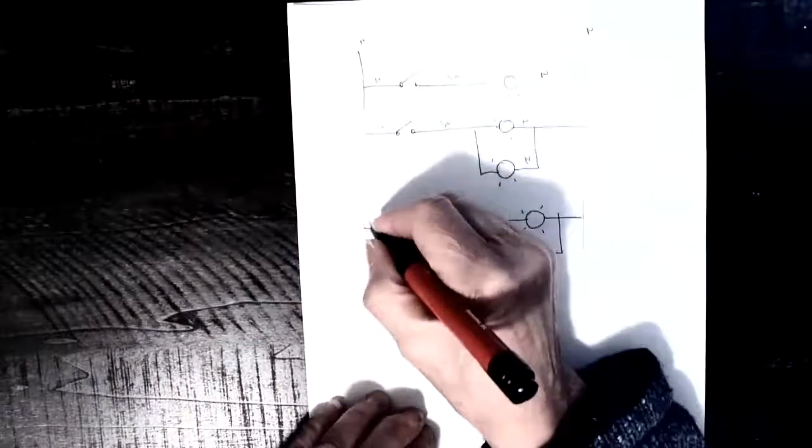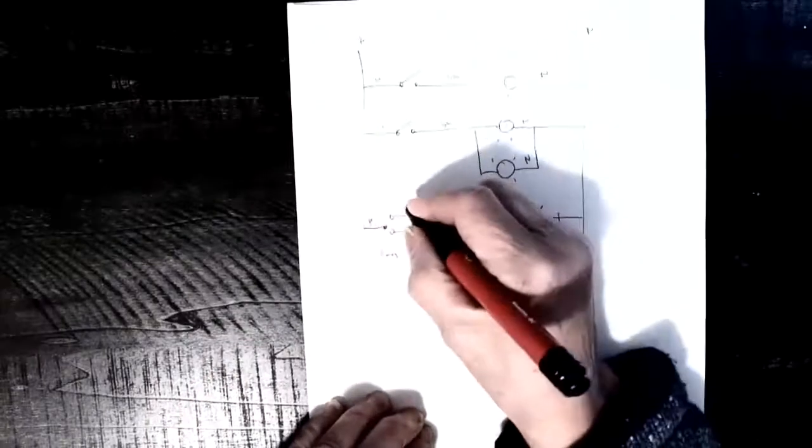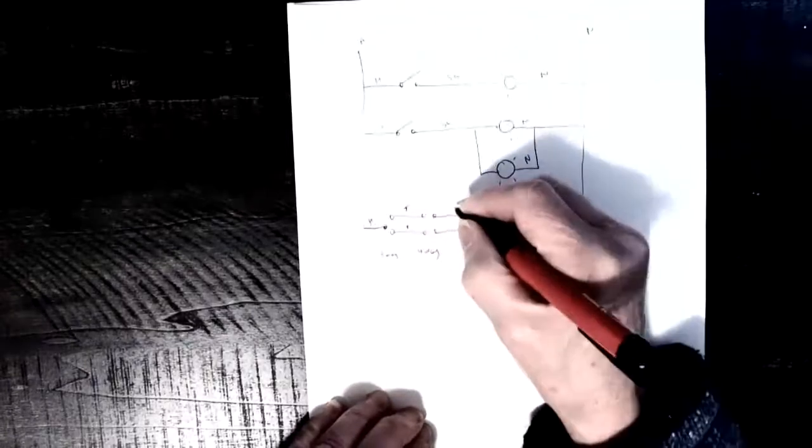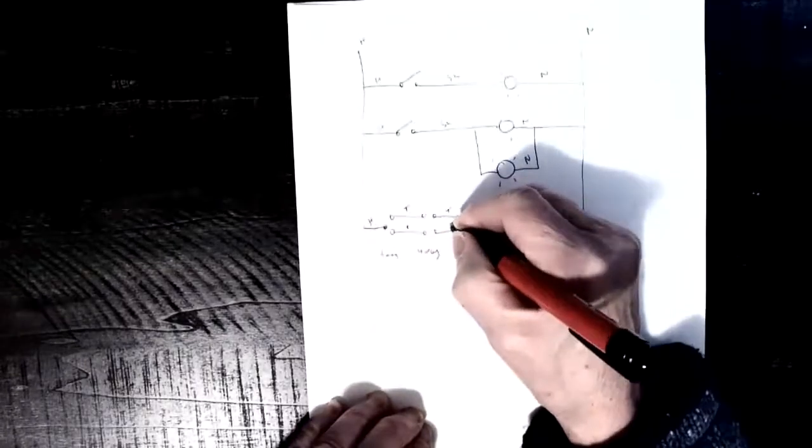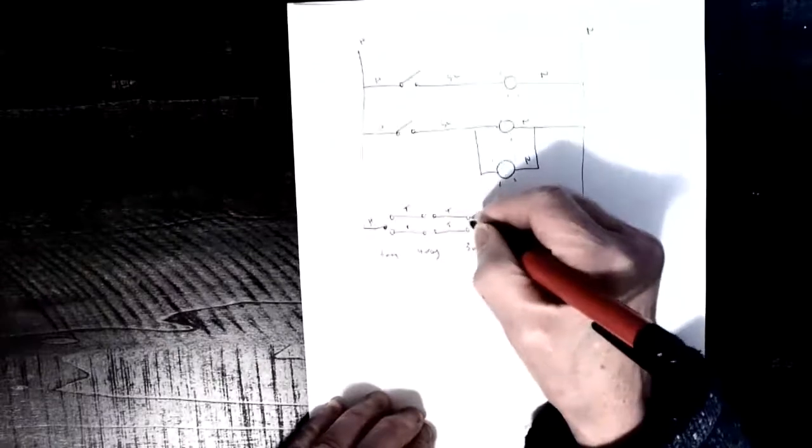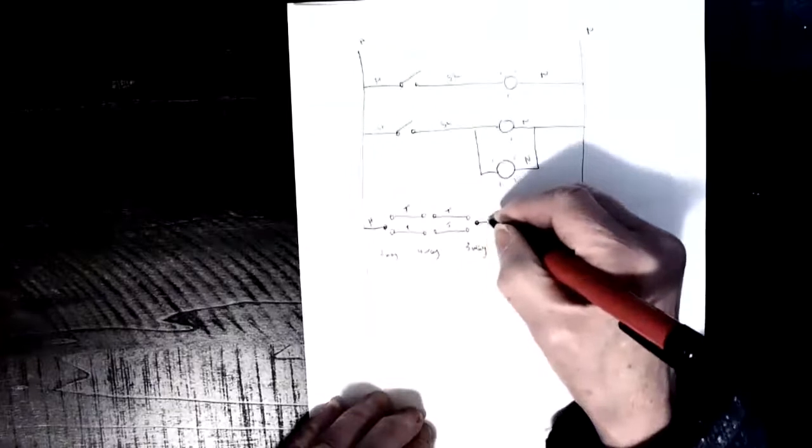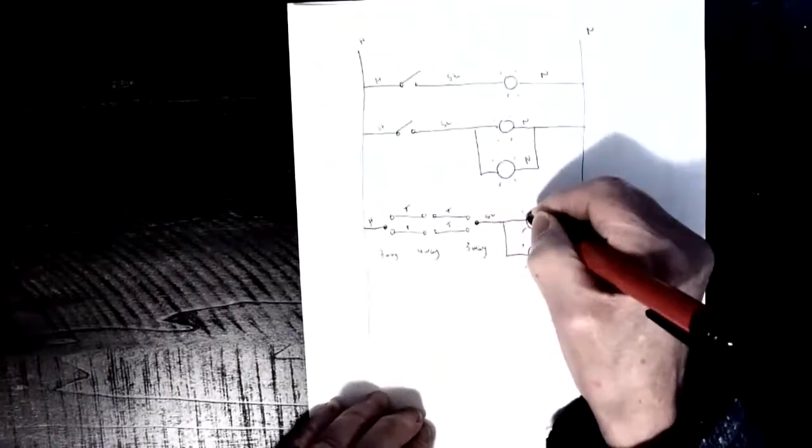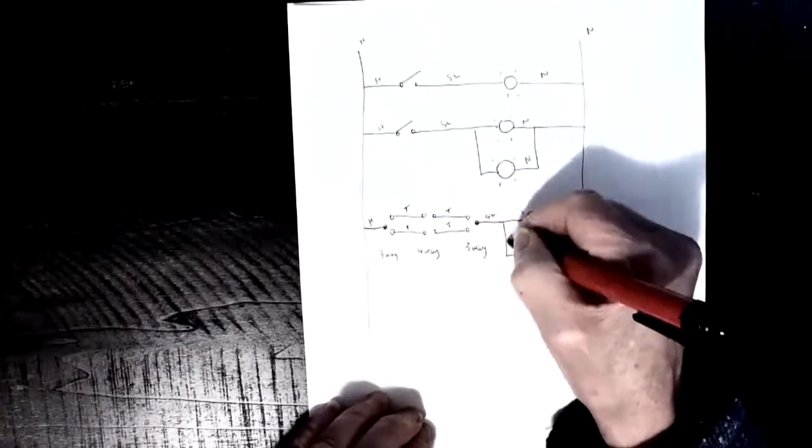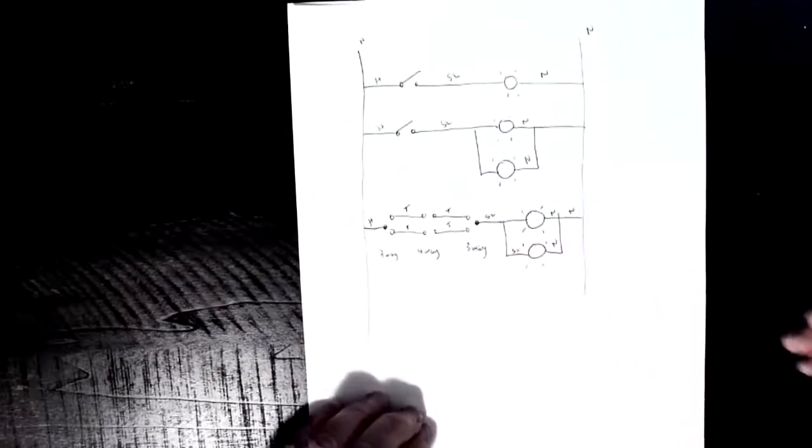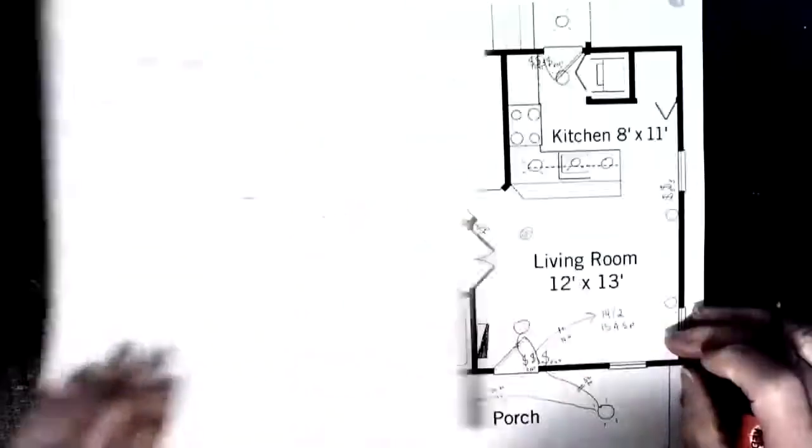So here, we're going to take a hot to the first common, and we have travelers going through the four-way switch into it, and then we have travelers leaving the outs, going to the next three-way switch, and then from the common of that three-way switch, we take a switch leg up to that light, and switch leg up to that light, and then the neutrals go back. So that's what we're going to wire up next.